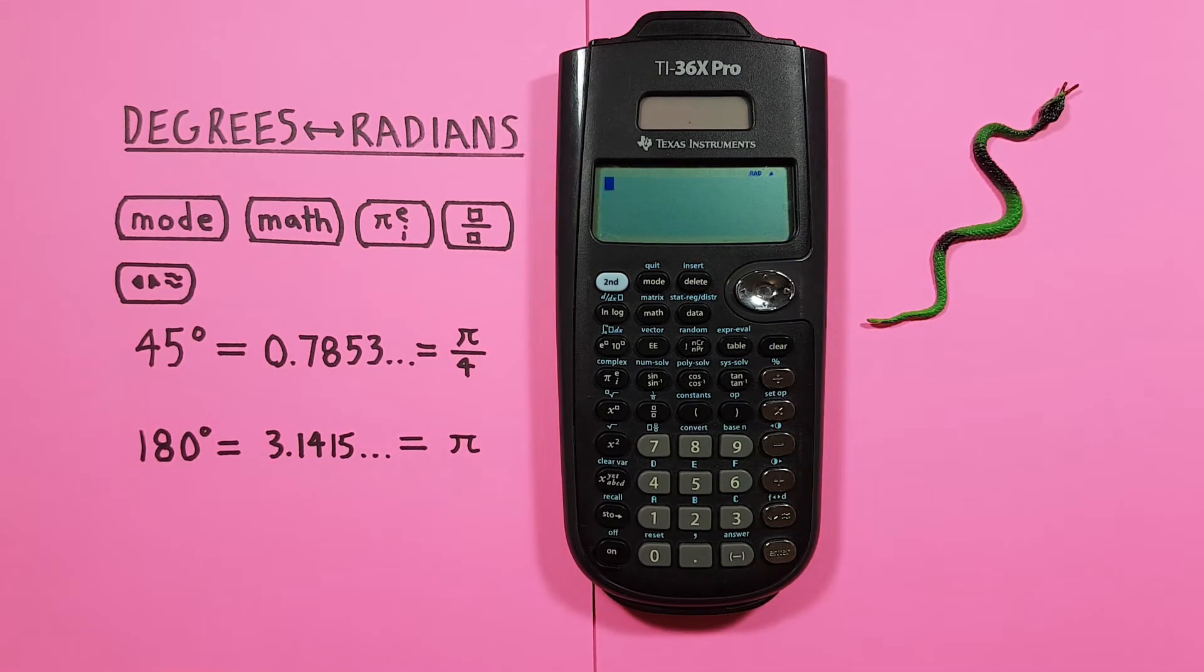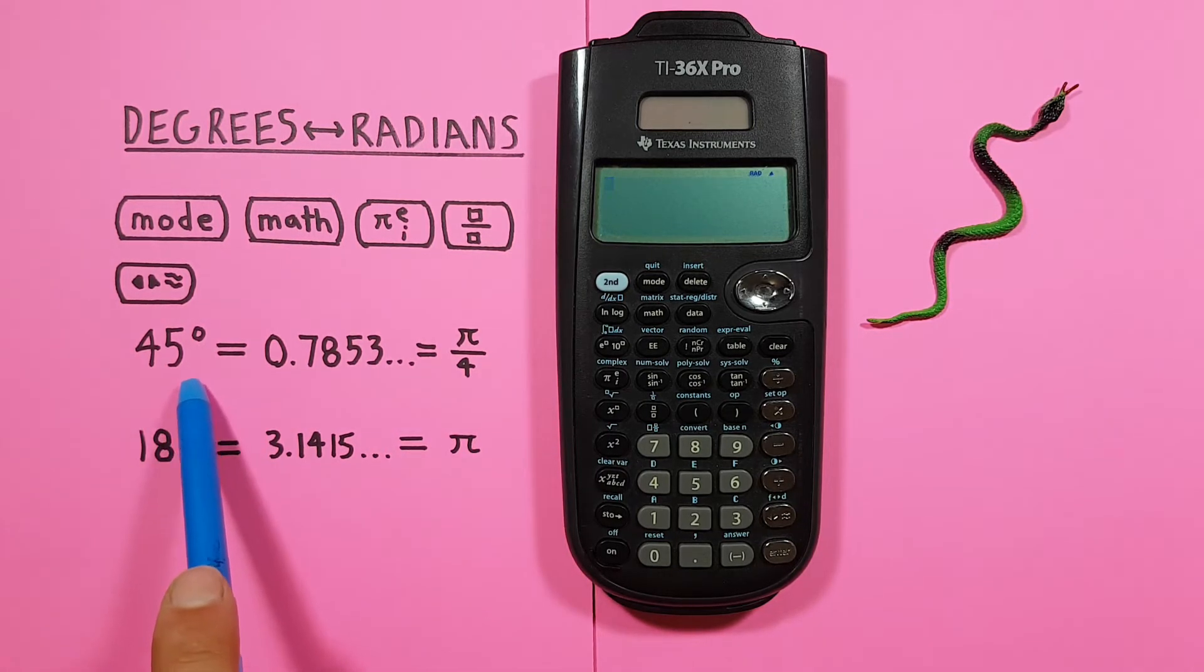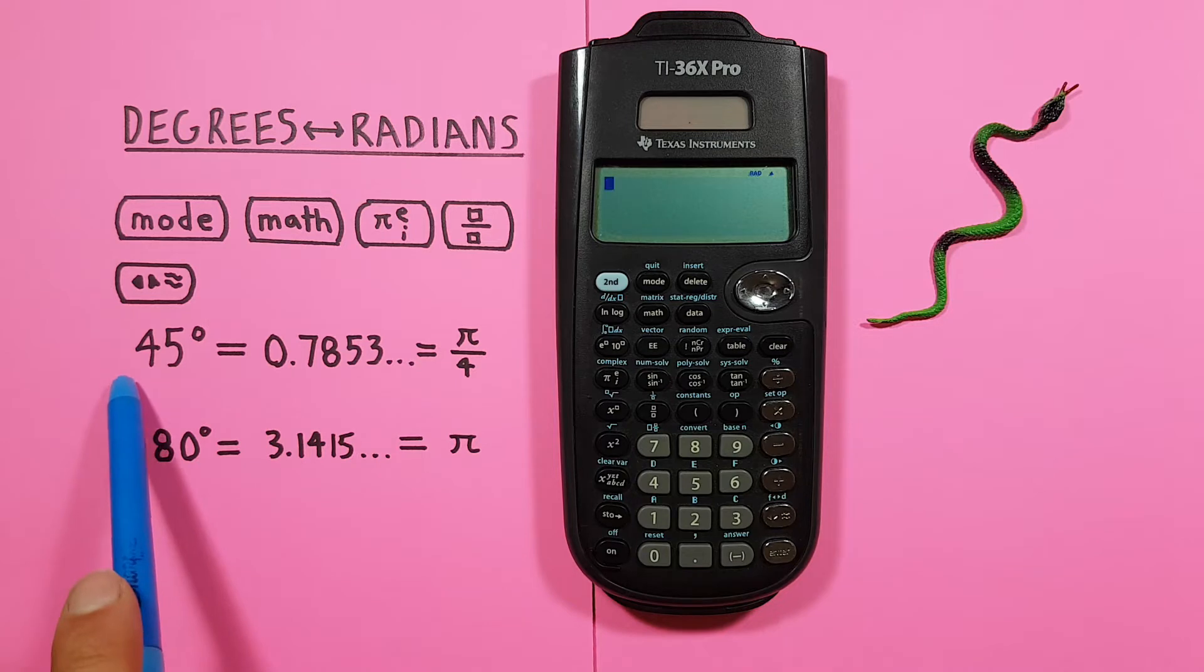What if we were given the radians, but wanted to convert that to degrees? Just like before, we need to change our calculator to the mode we want our results in. So for this it'll be degrees.